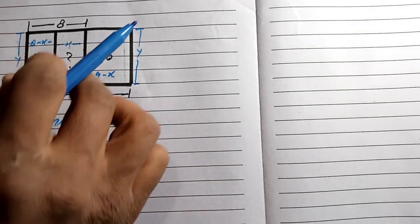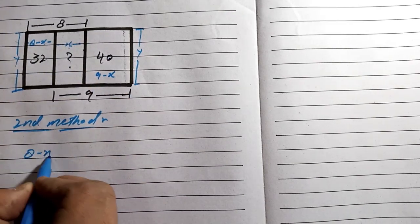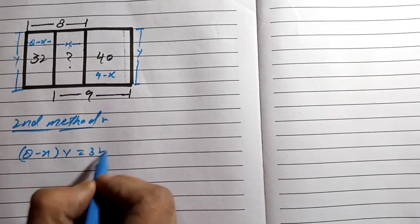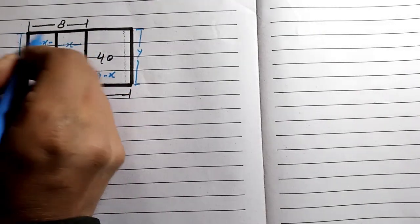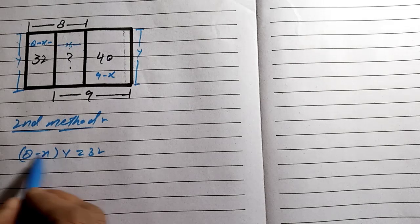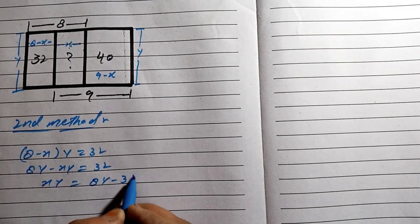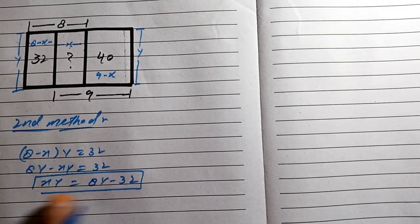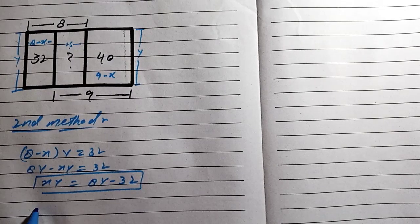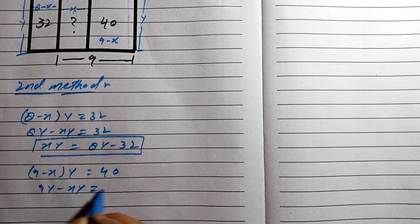Only this side is 9, and this side equals 9 minus x. We can see that the area of this region equals 8 minus x multiplied by y, which equals 32. Looking at this rectangle, this side is 8 minus x and this line is 9 minus x. So we have: y minus x times y equals 32, and x times y equals 8y minus 32. For this side, area equals 9 minus x multiplied by y equals 40, giving 9y minus xy equals 40.